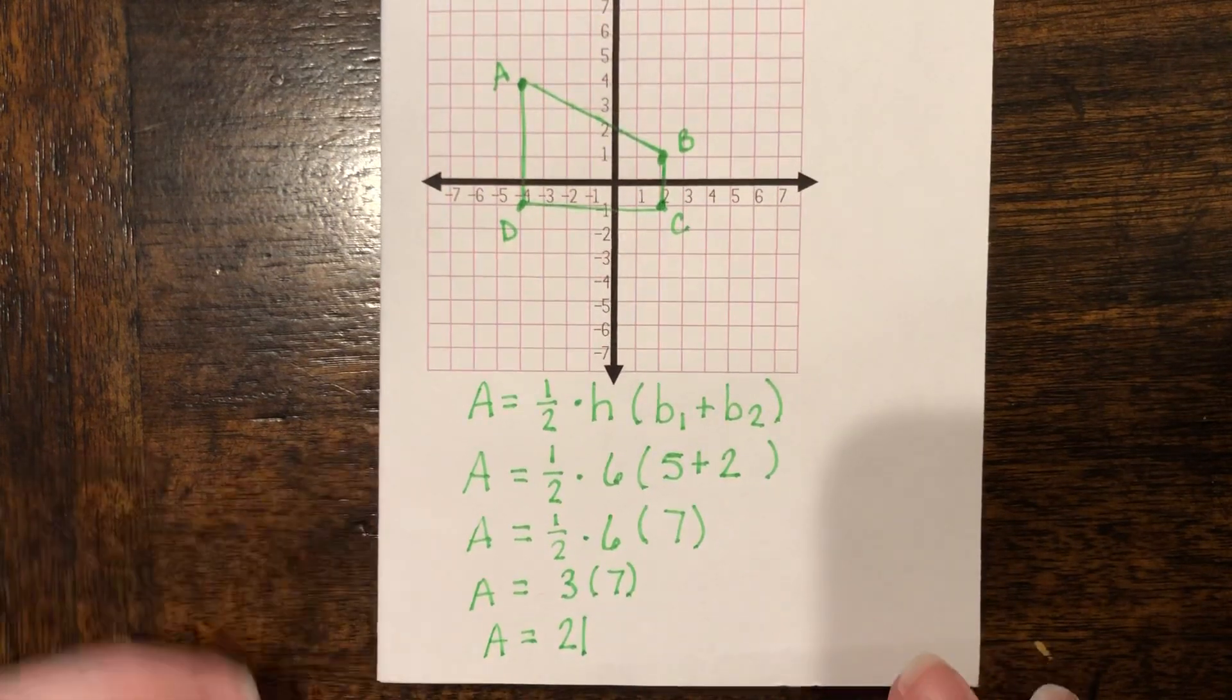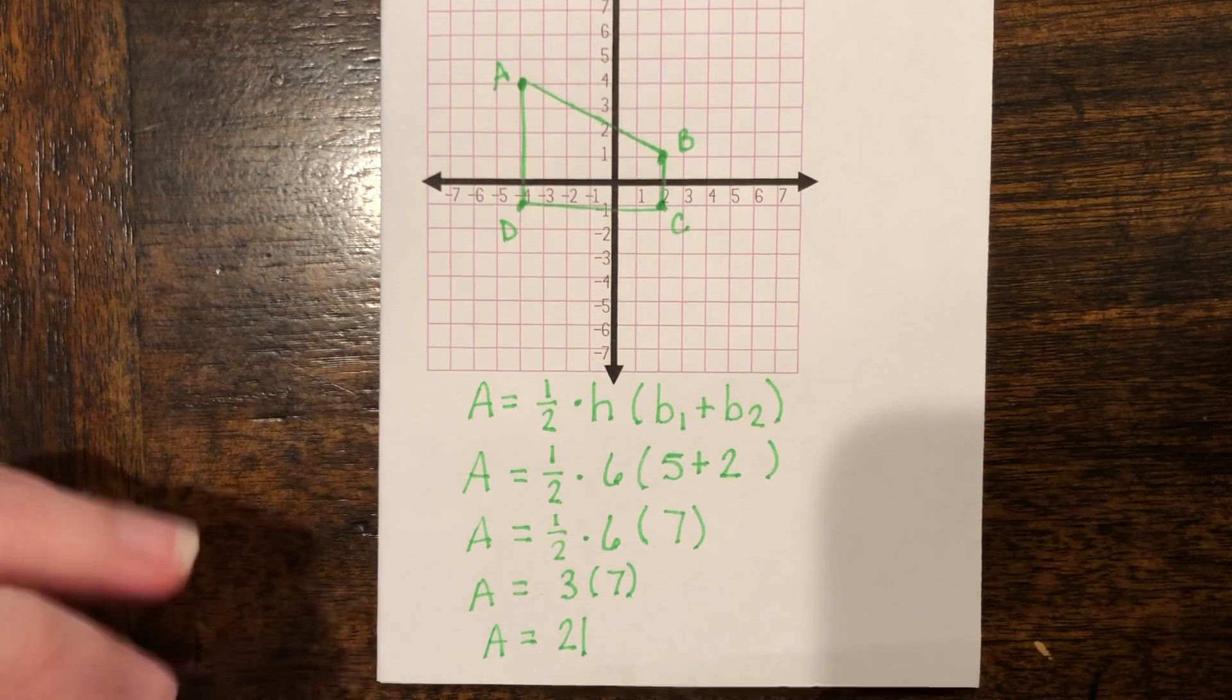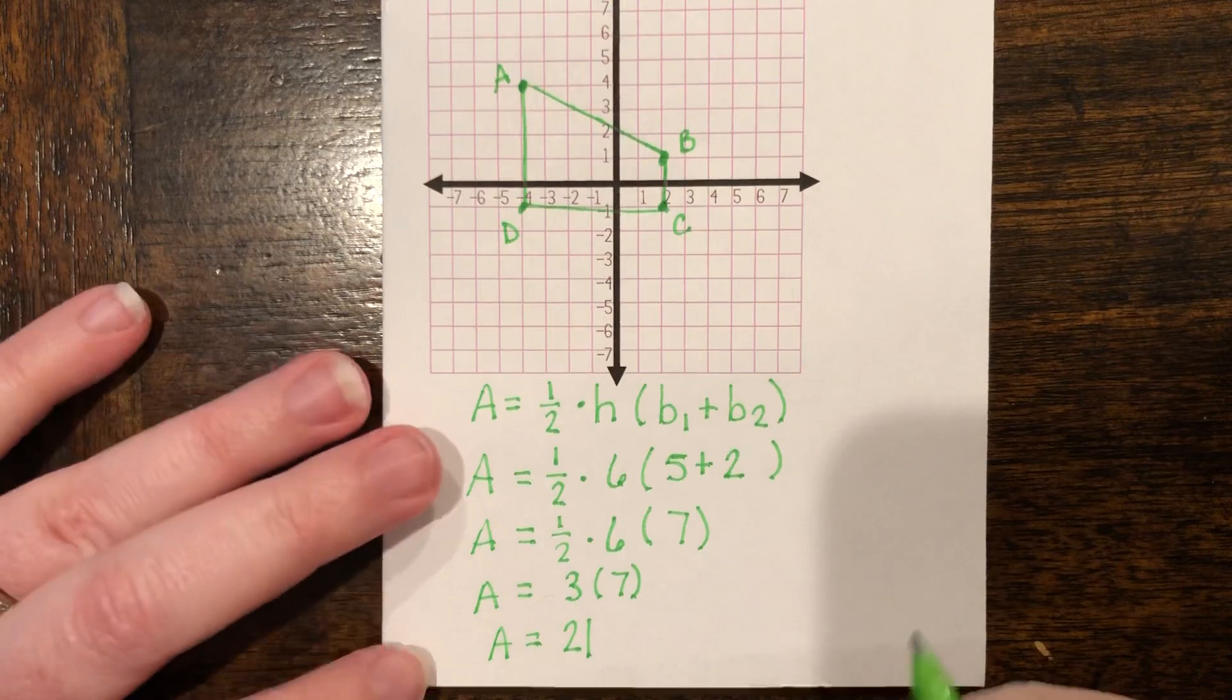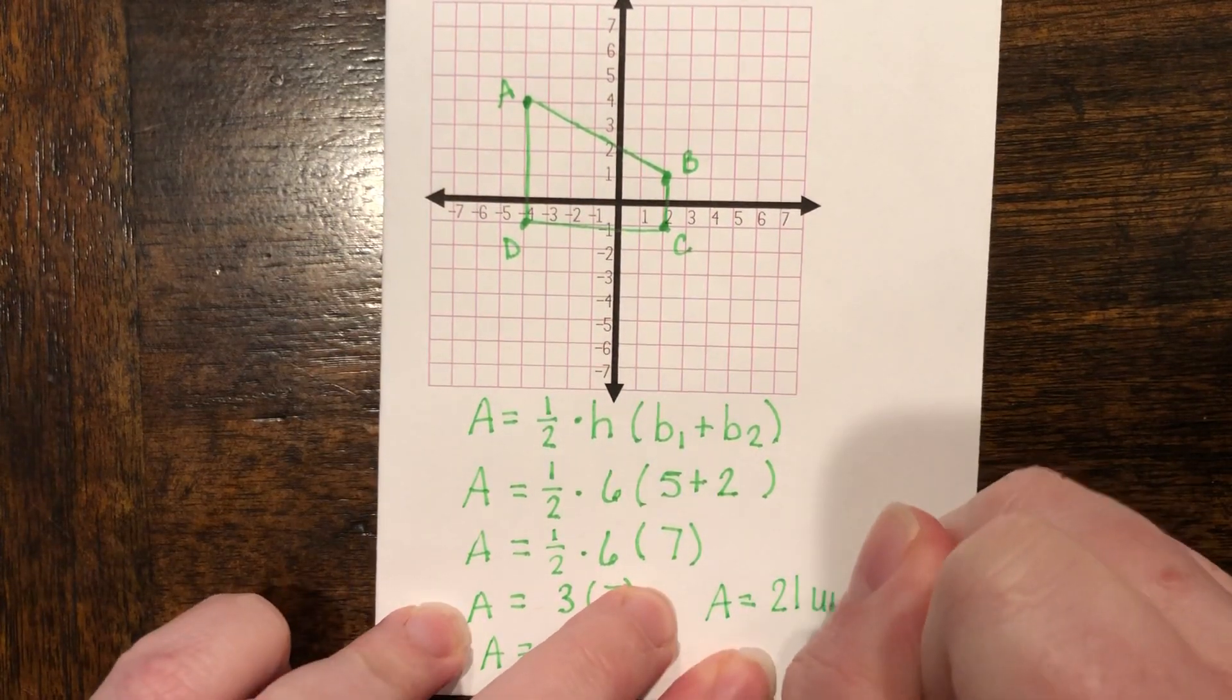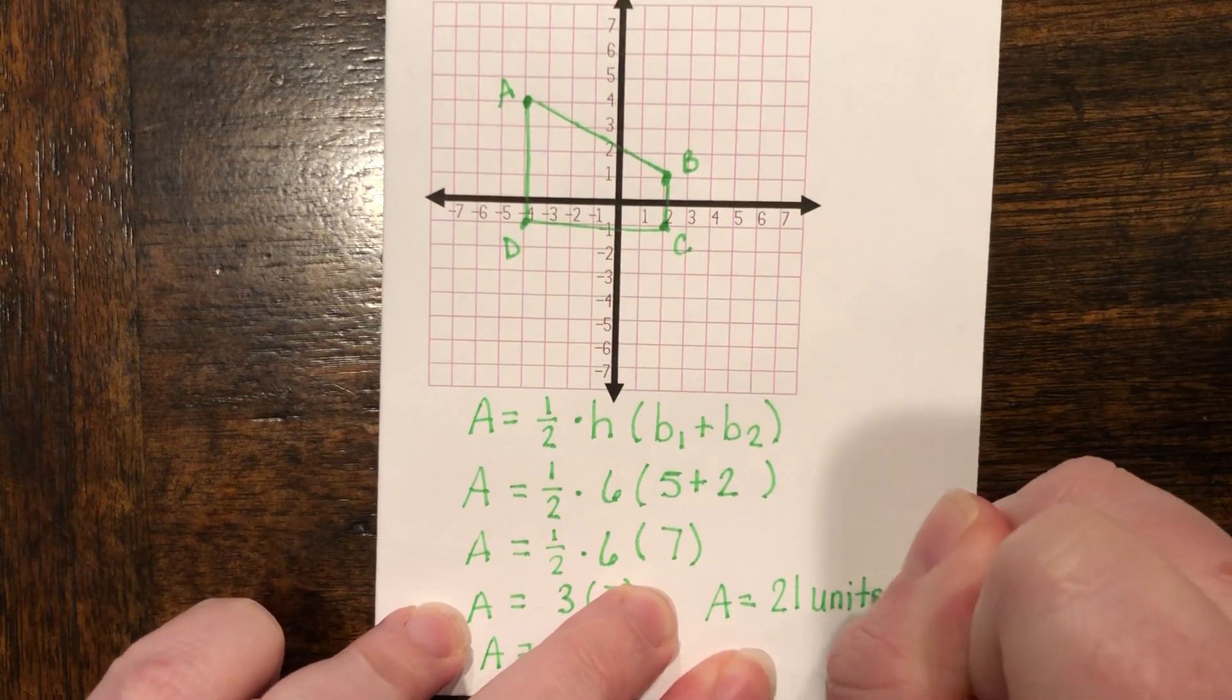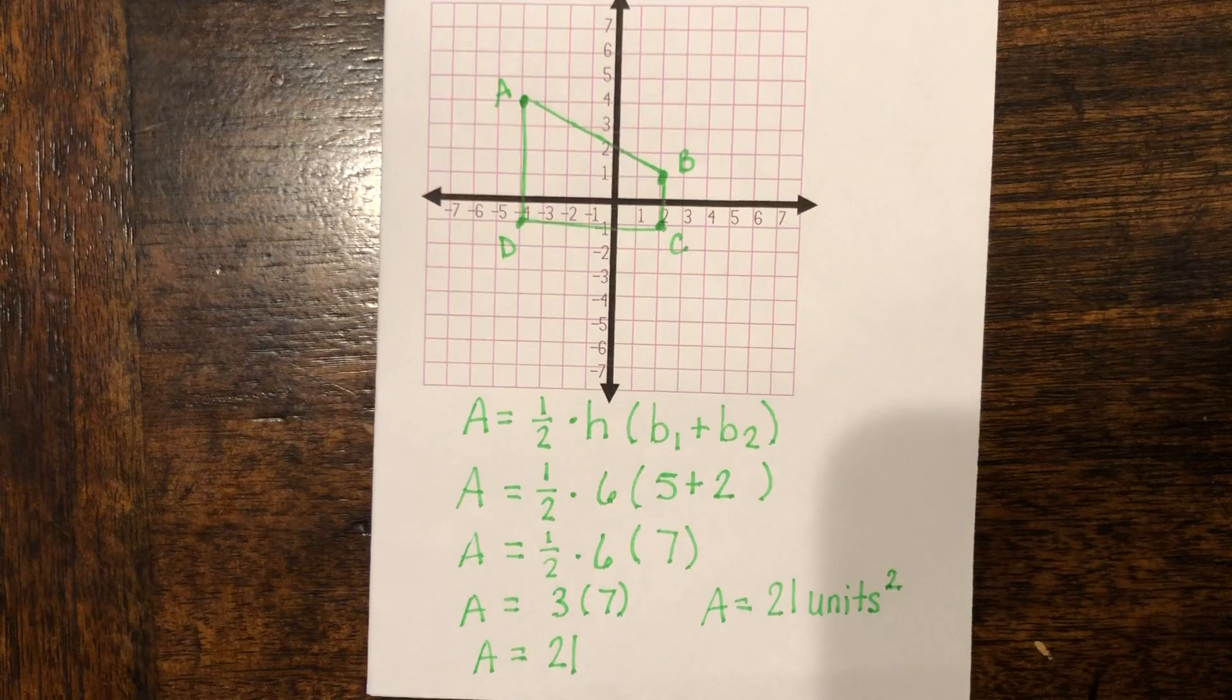Now when you go back into the problem, it does not say what unit this figure is. So we don't know the unit. So in order to properly write this, we're going to say that the area equals 21 units because it doesn't specify what units they are. And we know that the area is always squared.